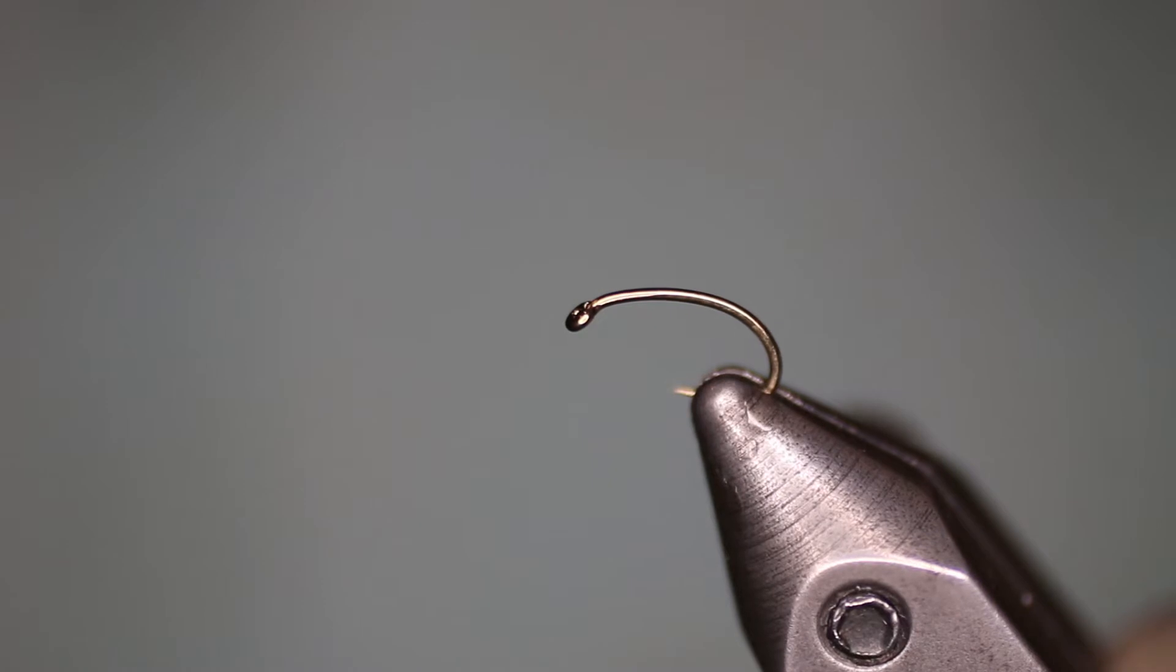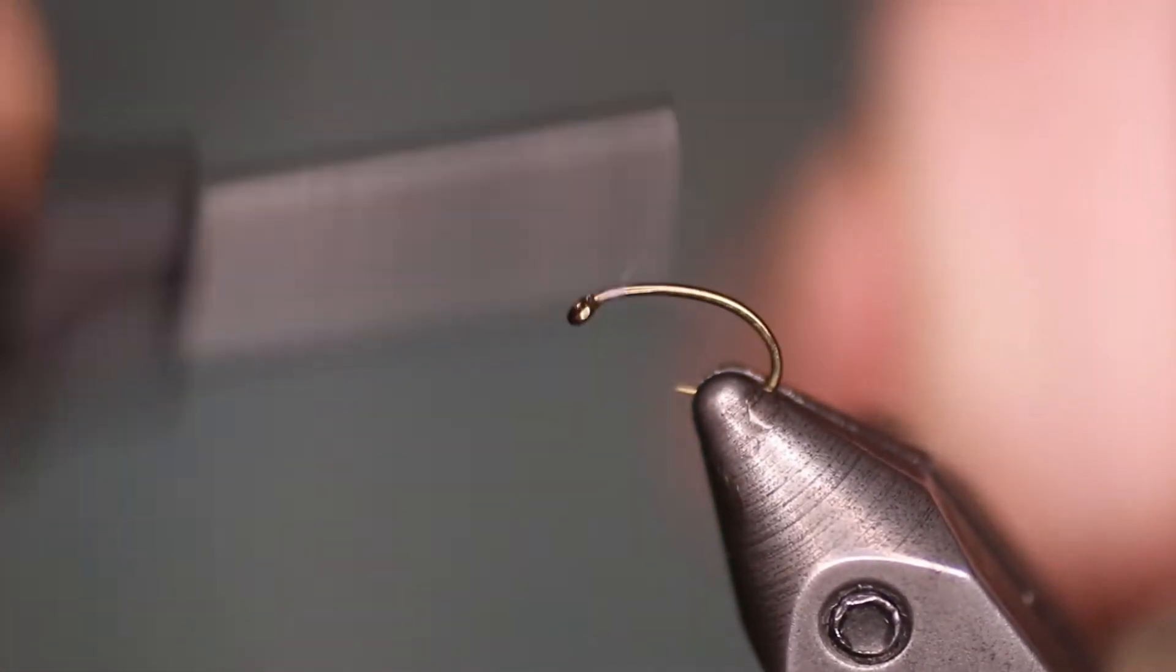Today we're going to be tying a WD-40. We're using a Daiichi 1120 in a size 16. Our thread is a UTC-70 in a Blue Dunn.